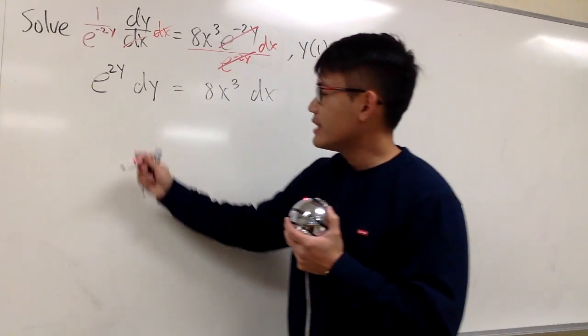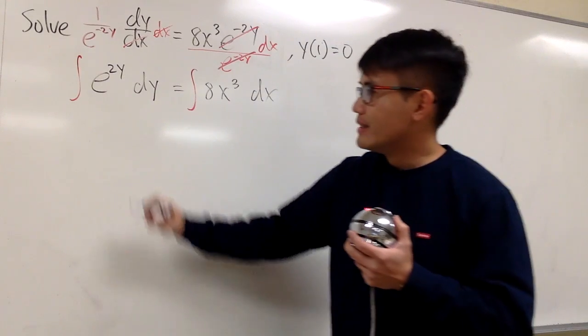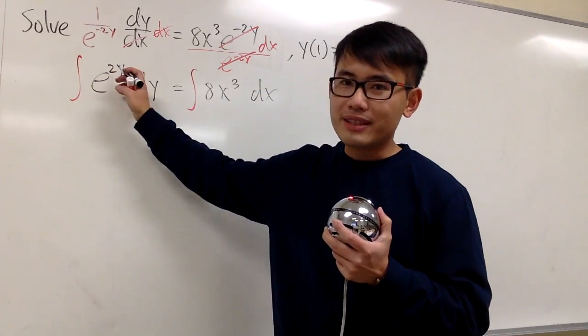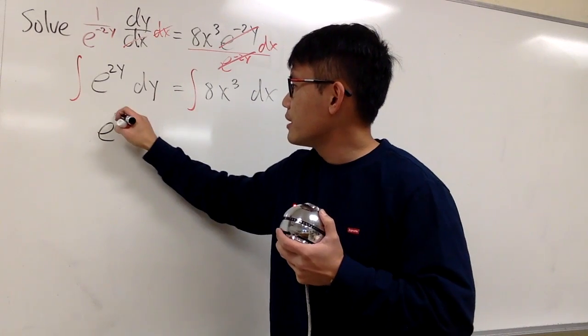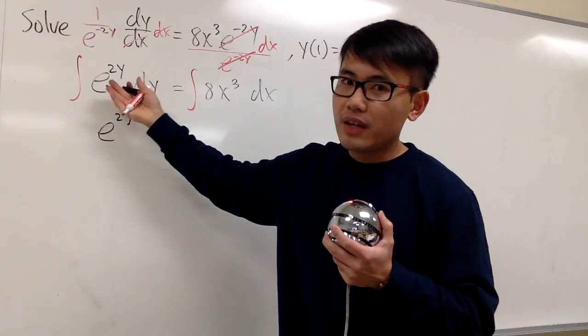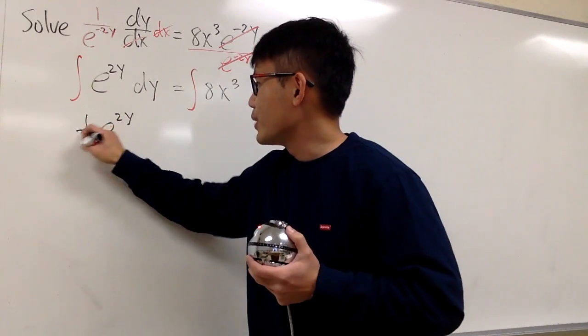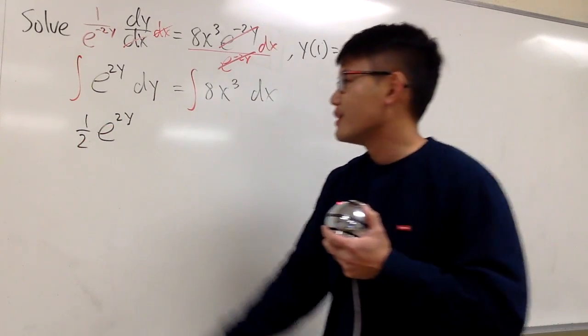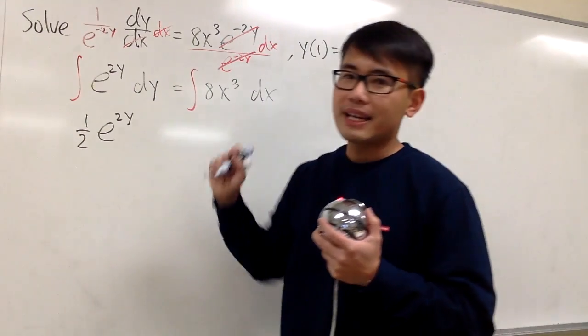And now we can integrate. The integral of e to the something, this is just a constant times y. You know this is going to be just e to the same thing, 2y. But then the derivative of 2y is 2, divided by 2, right? Because we are doing the anti-derivative. 1 half e to the 2y. If you differentiate this, you'll get that back. That's great.